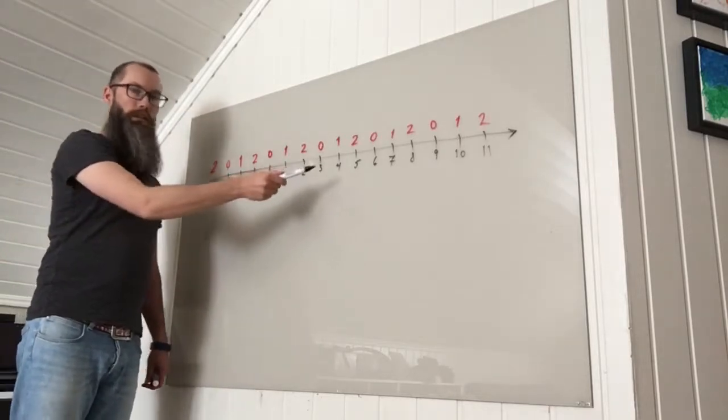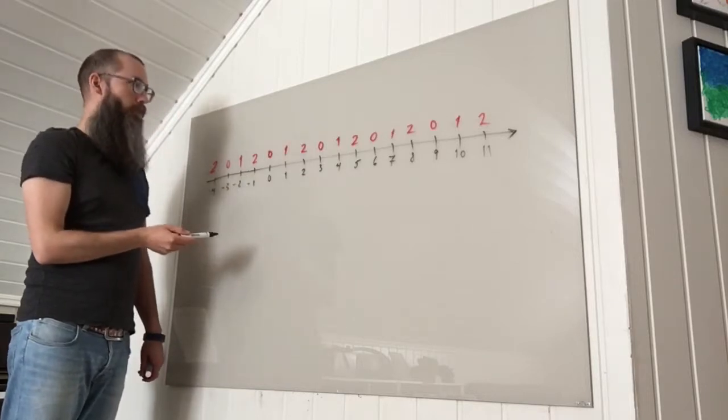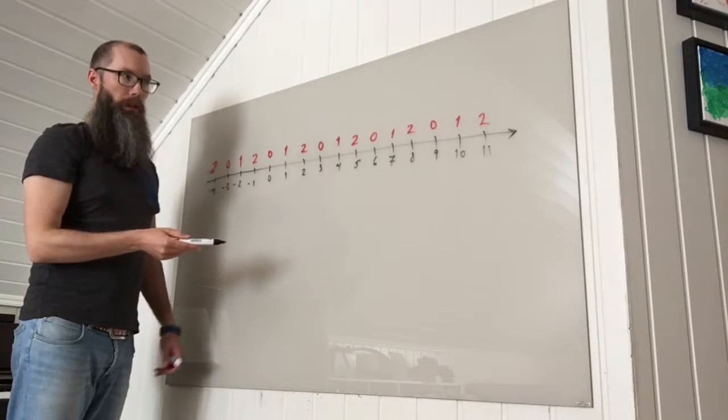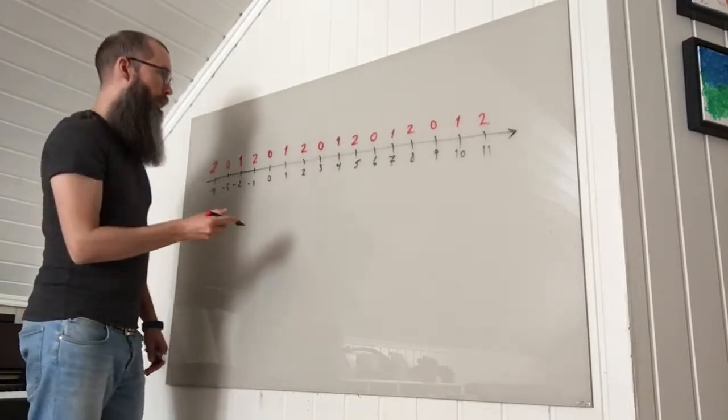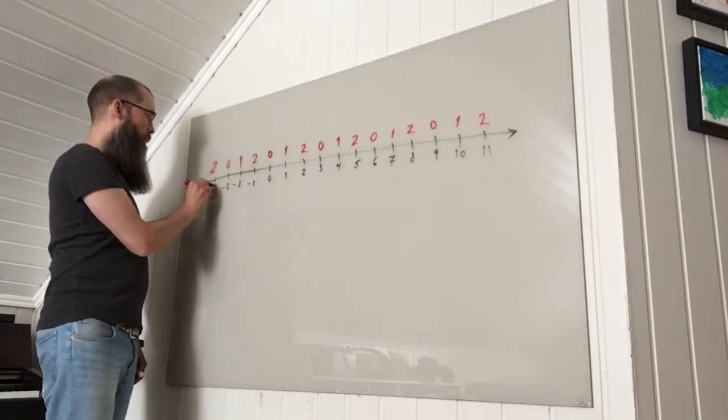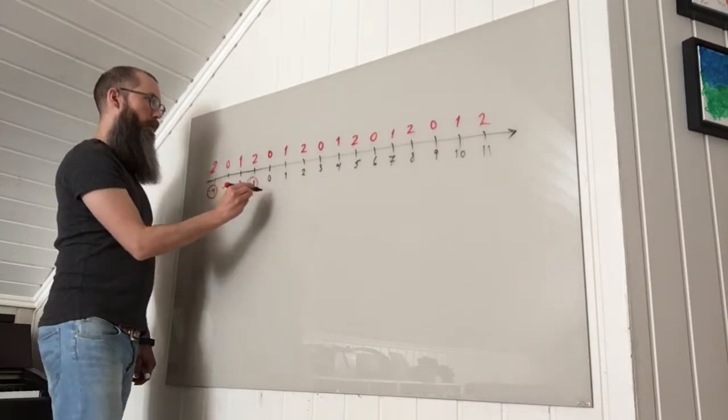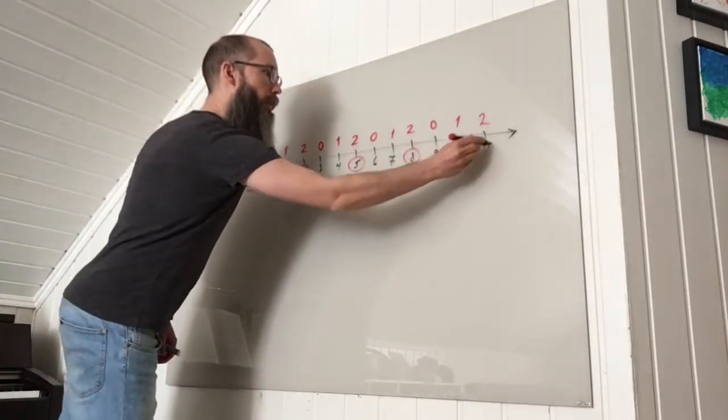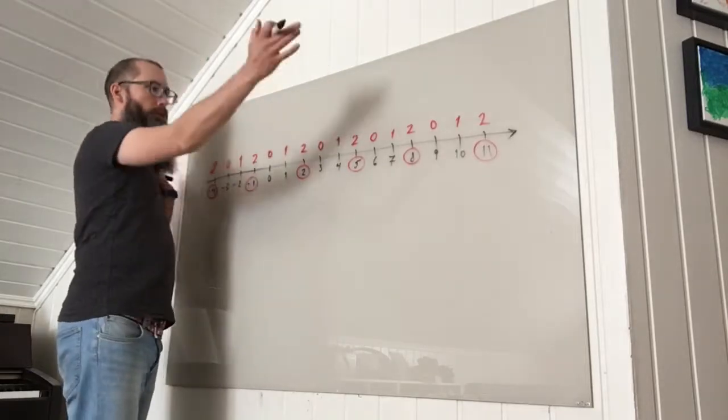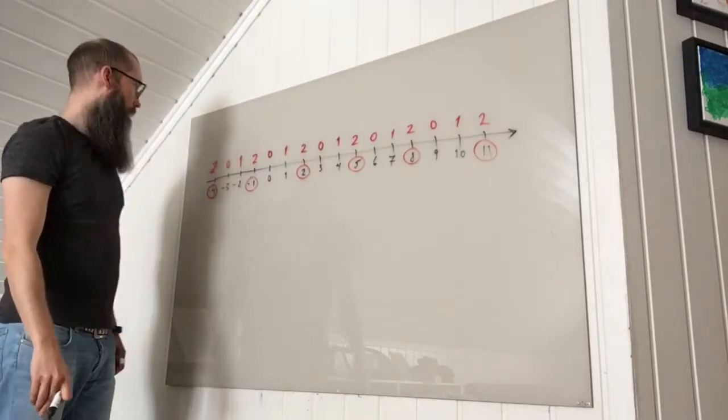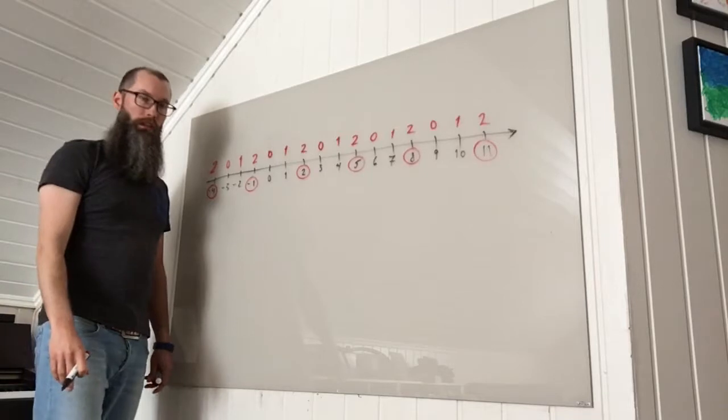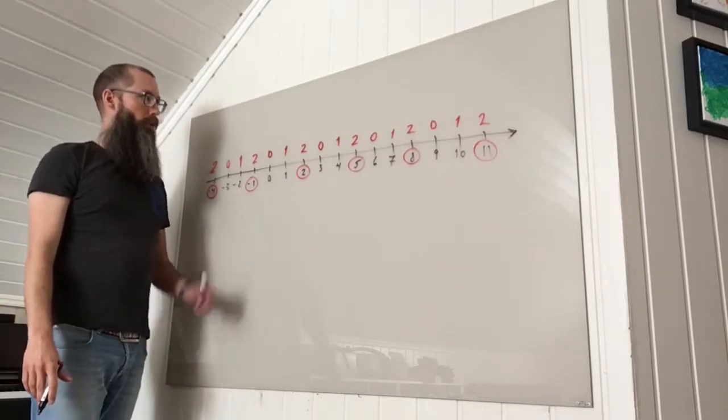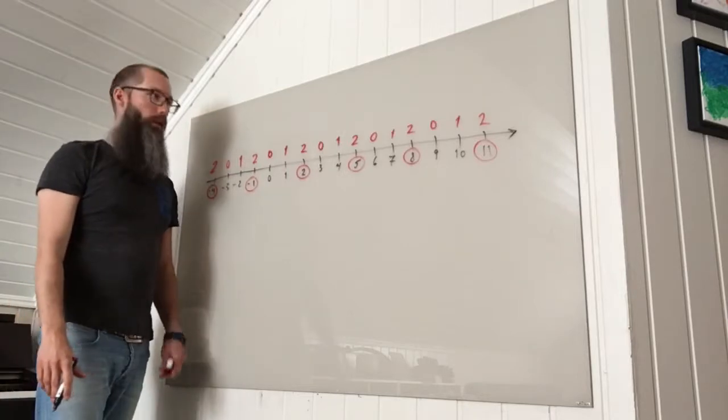So all of the integers which have the same remainders when divided by 3 are said to be congruent modulo 3. So for instance 4, minus 1, 2, 5, 8 and 11 and all of the rest when we just continue the number line extended in both directions. All of them are said to be congruent modulo 3 because they have the same remainder when divided by 3.